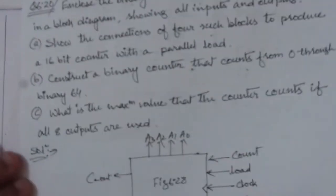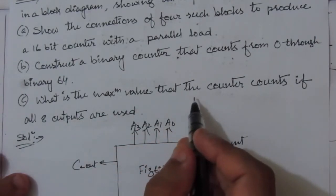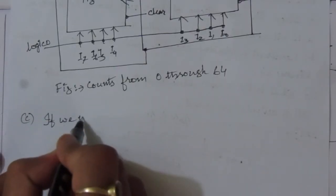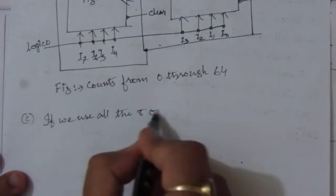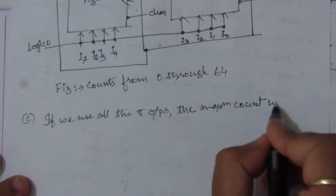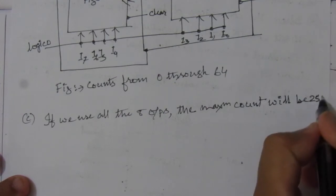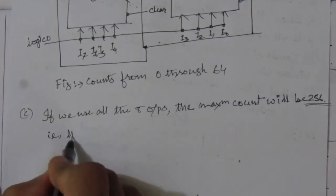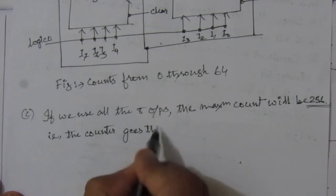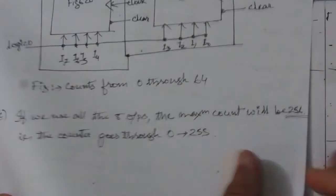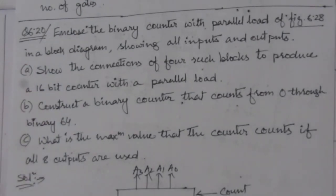In the third part of the problem, we are asked what is the maximum value the counter counts if all eight outputs are used. If we use all eight outputs, the maximum count will be 256, because 2 to the power 8 equals 256. So the counter goes from 0 to 255. This is the solution to problem number 6.20 from chapter number 6. Thank you for watching — if you have any questions, please put them in the comment section below. Also like, share, and subscribe to my channel.